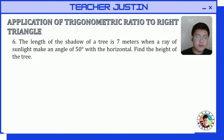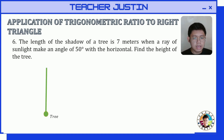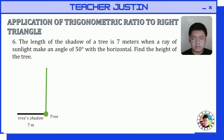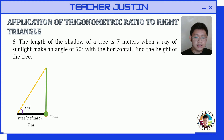Next example: the length of the shadow of a tree is 7 meters when a ray of sunlight makes an angle of 50 degrees with the horizontal. Find the height of the tree. Let's illustrate — we have the tree casting a shadow of 7 meters, and the 50-degree angle is created from the tip of the shadow to the top of the tree.